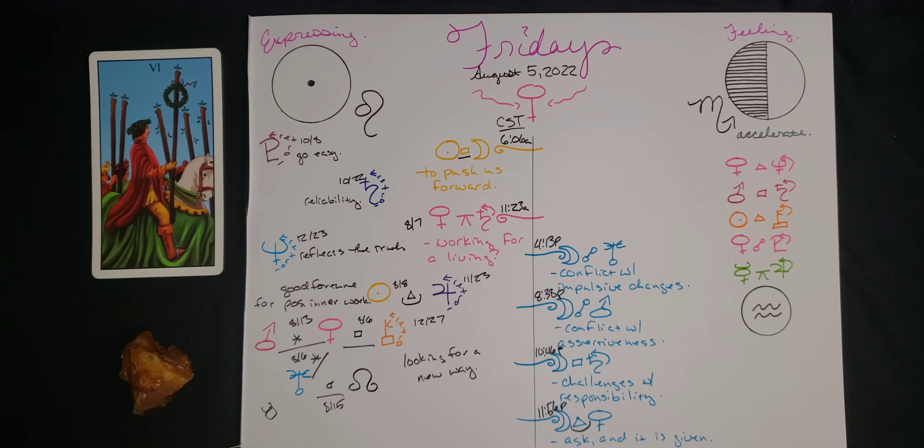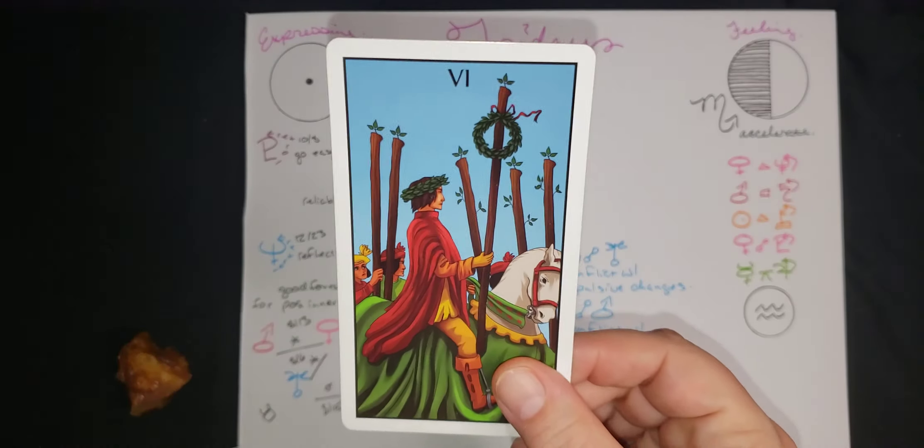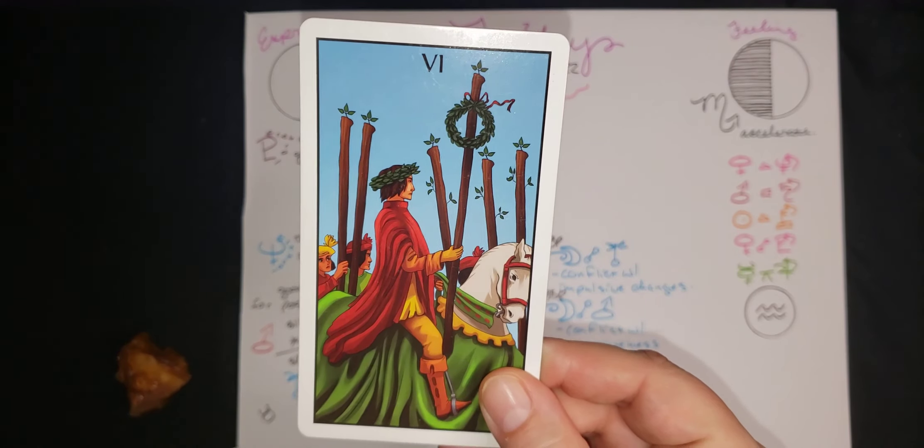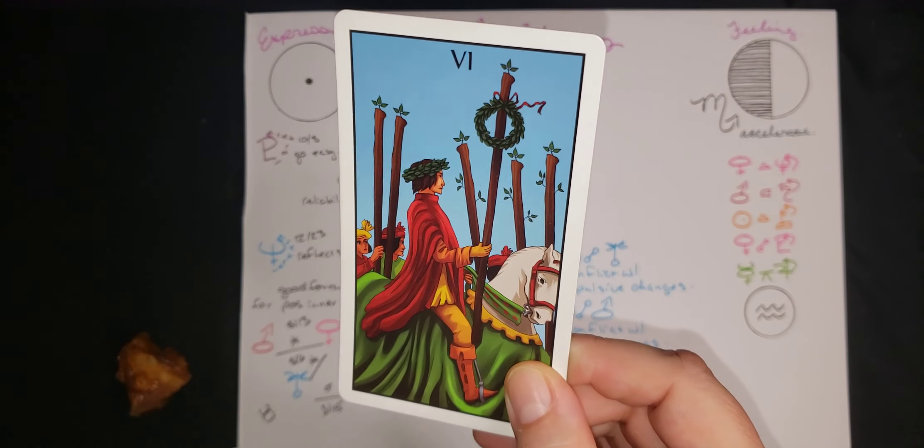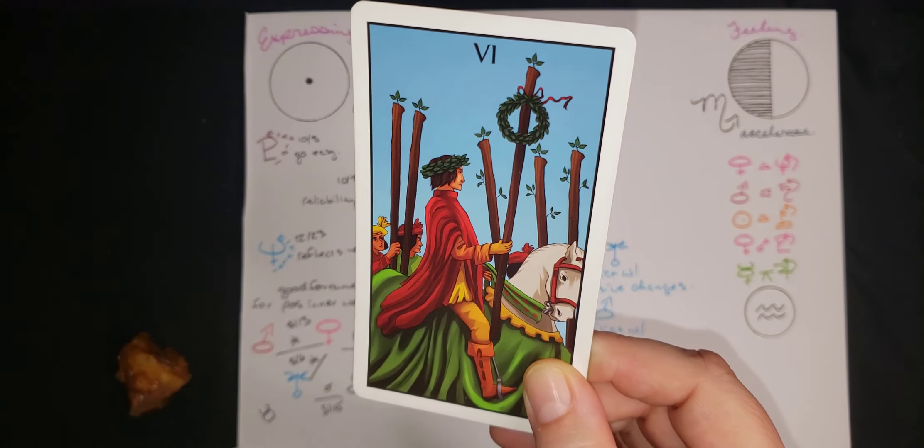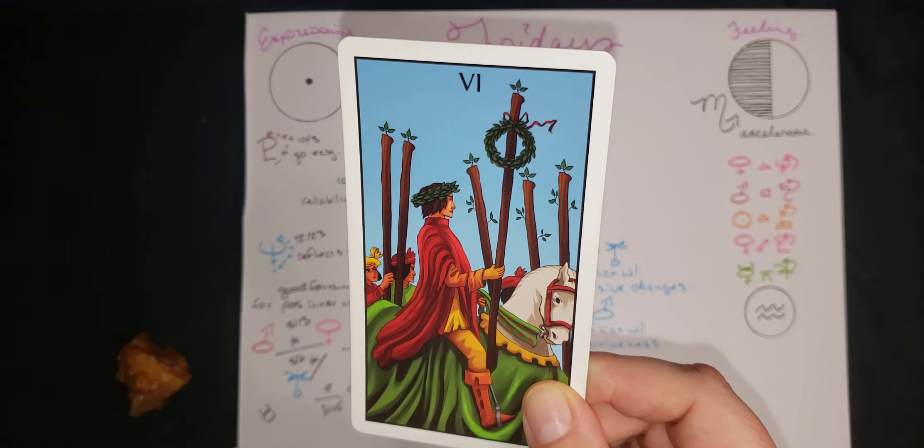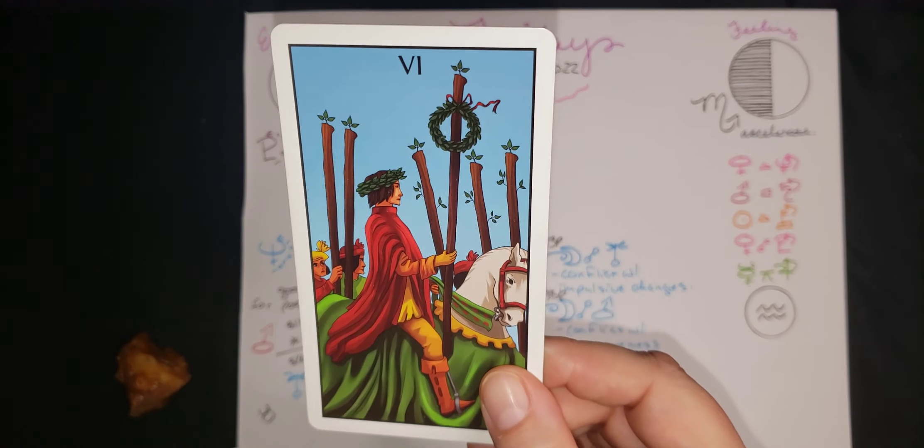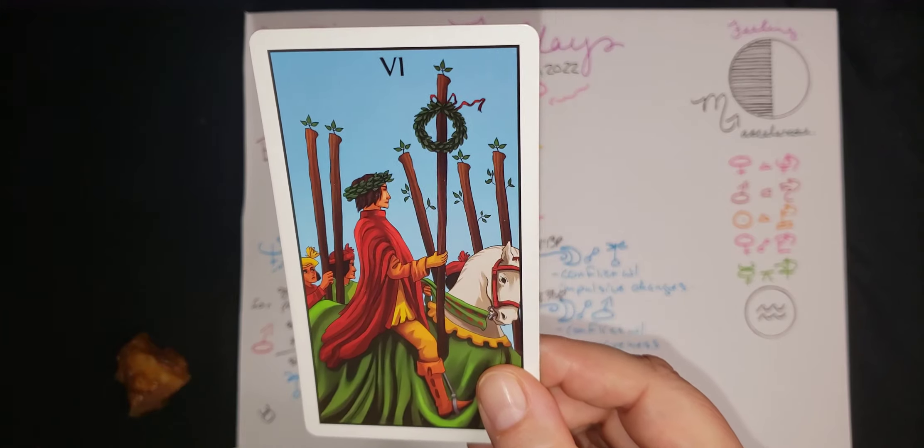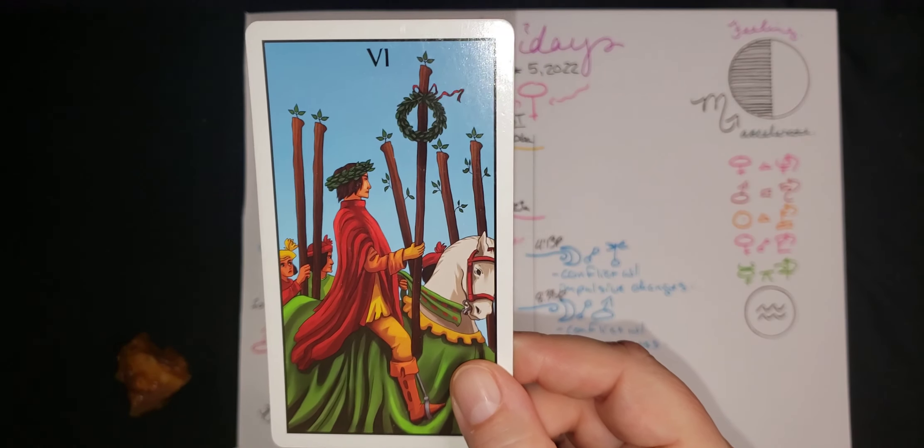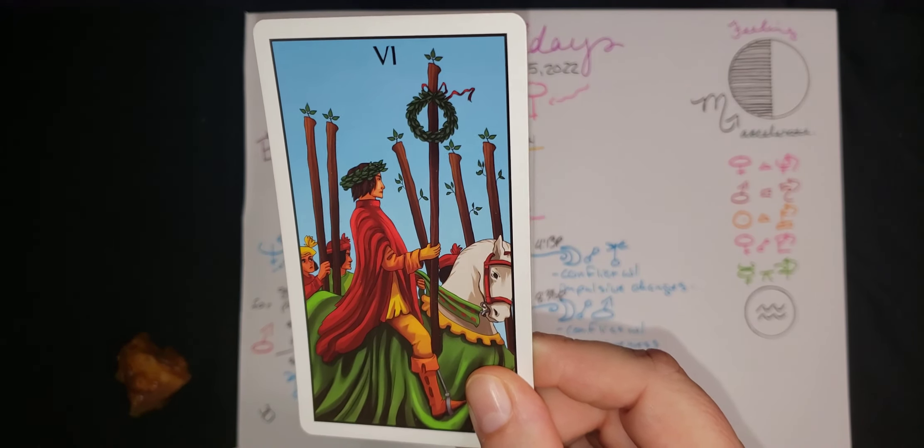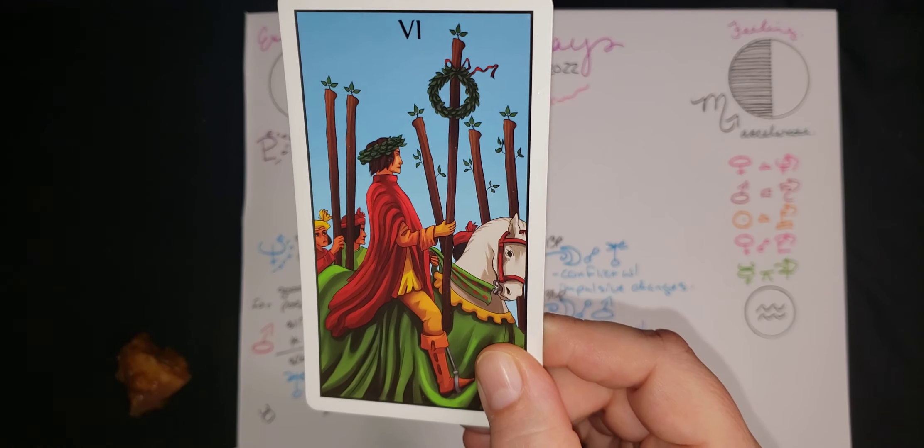Here we see with the Six of Wands somebody who has taken some kind of action that everybody else is very impressed with. So they've made this person a wreath of laurels to wear on their head and to hang from their staff.